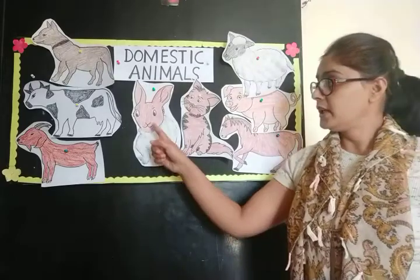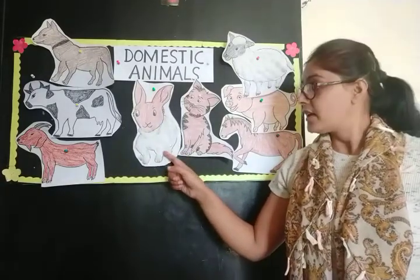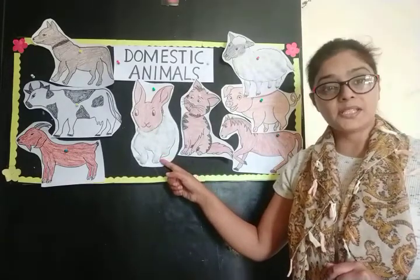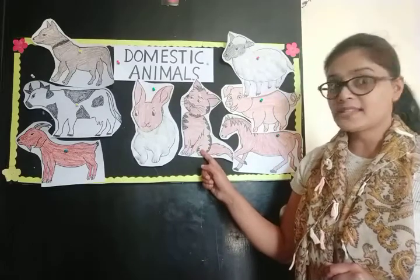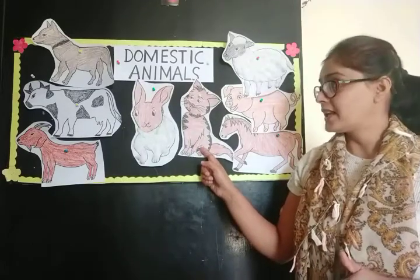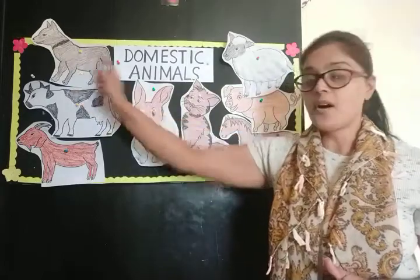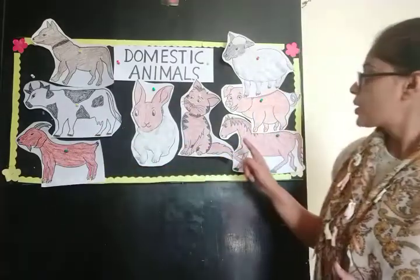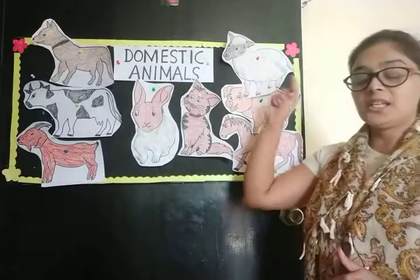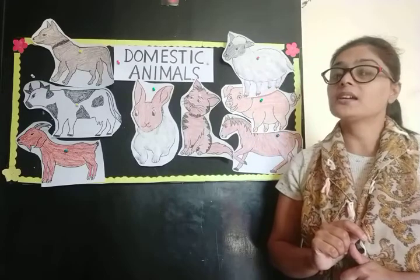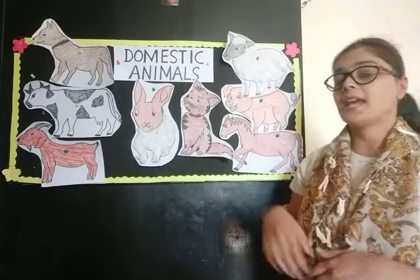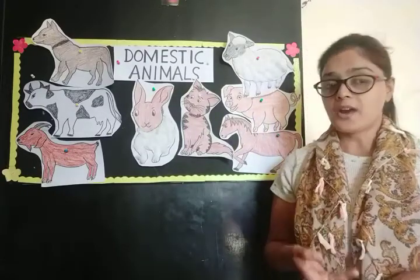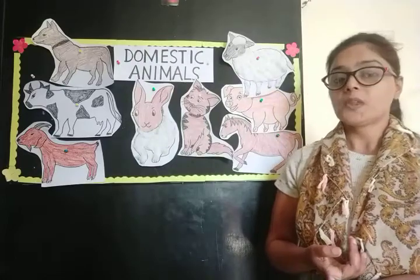And children, can you tell me? Rabbit — what does it eat? Rabbit eats carrots. And cat drinks milk. Cat and dog drink milk. Cow, goat, horse, and sheep — they eat green grass. Cow can also eat all kinds of food like fruits, vegetables, rice, dal, and chapati.